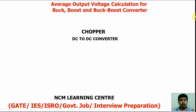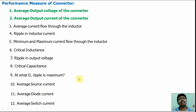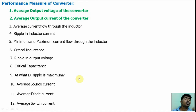NCM Learning Center. Good morning friends. In this video we will discuss how to calculate the average output voltage for the buck, boost, and buck-boost converters. These are various performance measures for these converters: average output voltage, output current ripple current, average current flow through the inductor, critical impedance, critical capacitance — all are important performance measures. In this video we will derive the average output voltage and average output current for the buck, boost, and buck-boost converters. In the next video we will discuss the other performance measures.